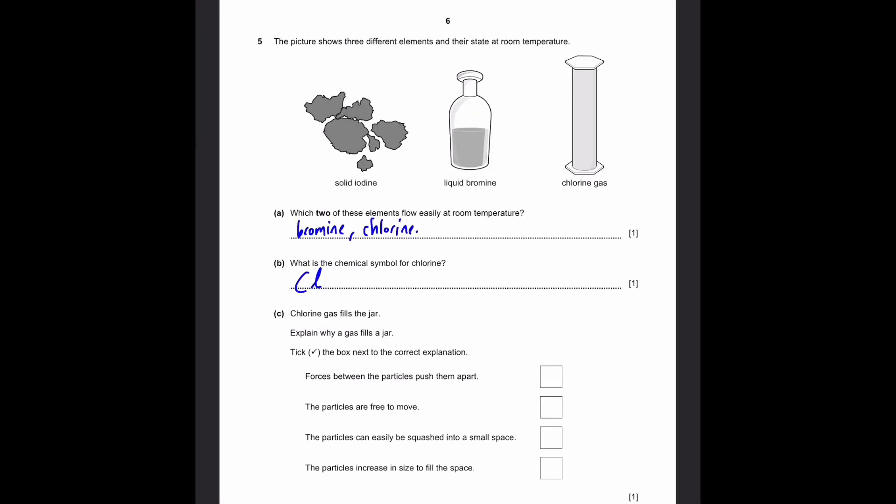C. Chlorine gas fills a jar. Explain why a gas fills a jar. Tick the box next to the correct explanation. Forces between the particles push them apart - No, it's because there are not a lot of forces between gases. The particles are free to move. Technically, that's correct because they move in a random direction.